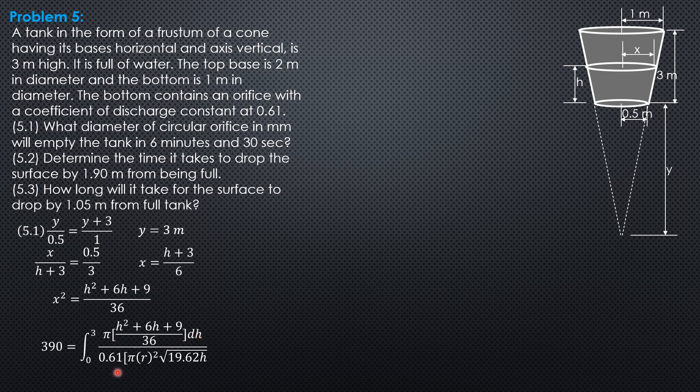Where C is 0.61. Area of orifice is pi R squared. Then square root of 2g is 19.62 times H. So 390 times 36 times 0.61 times square root of 19.62 R squared equals 37935.555 R squared.